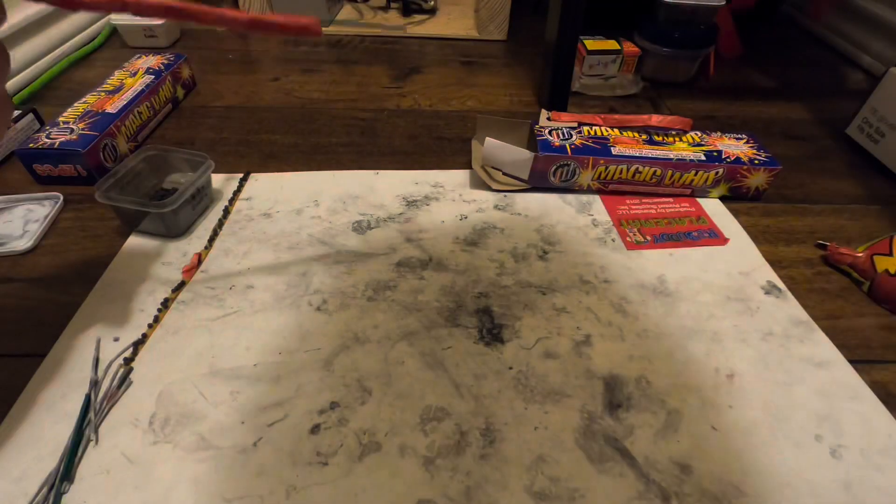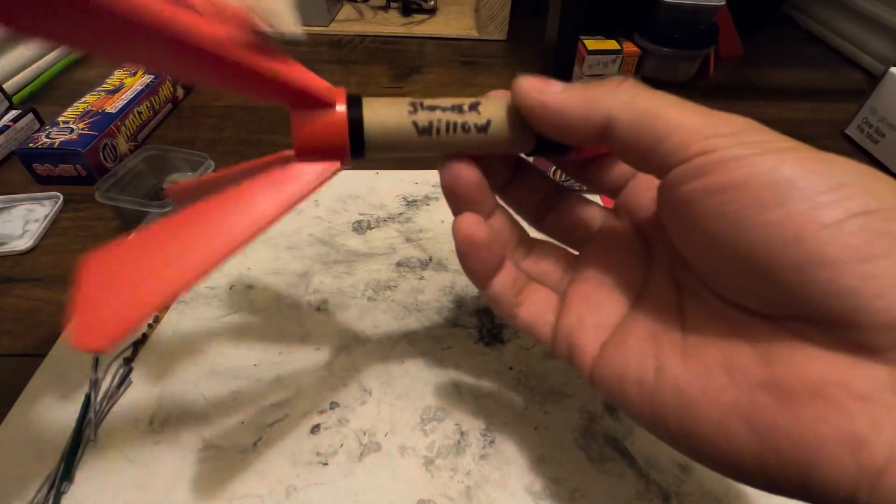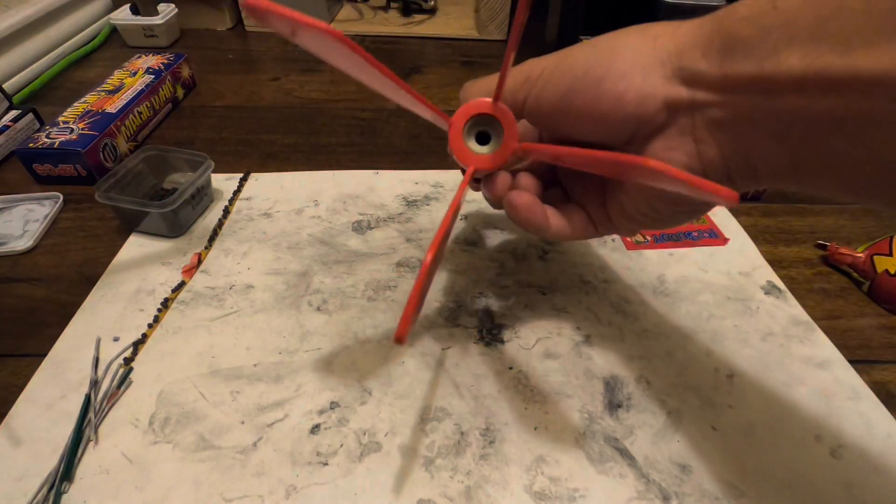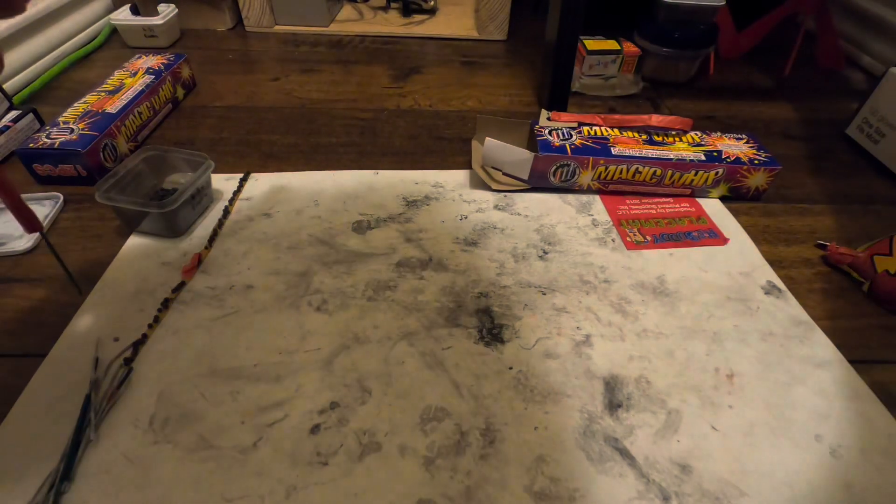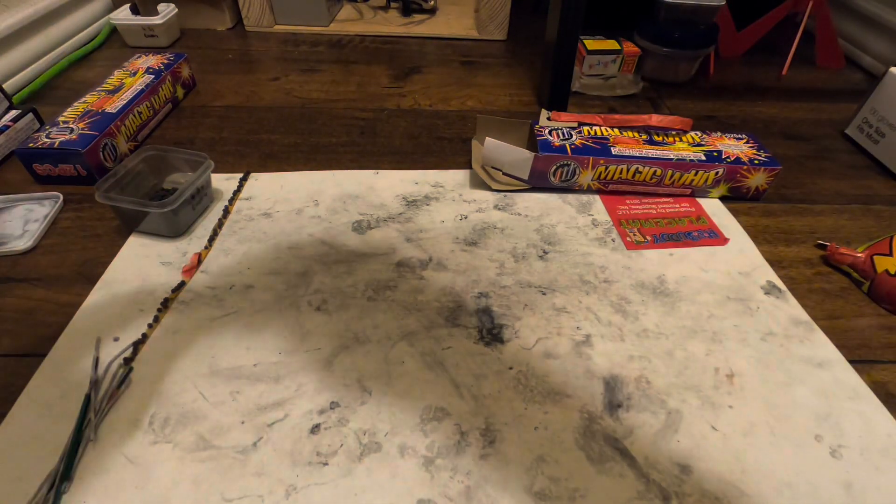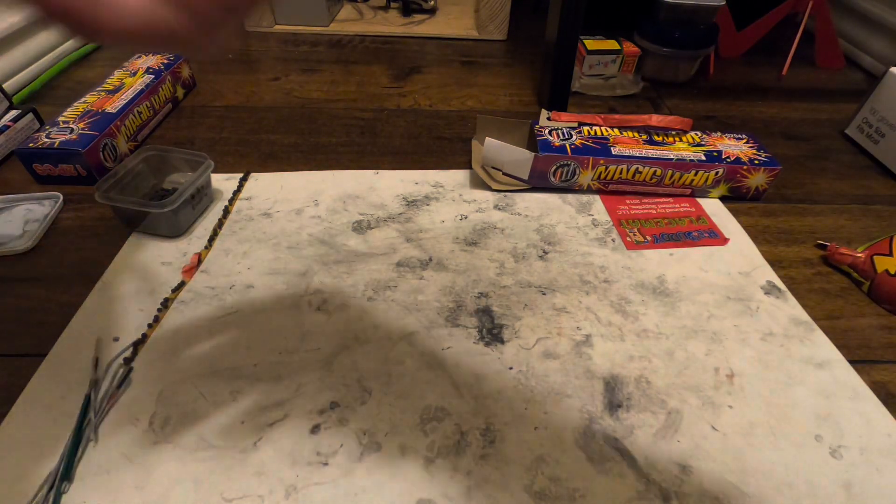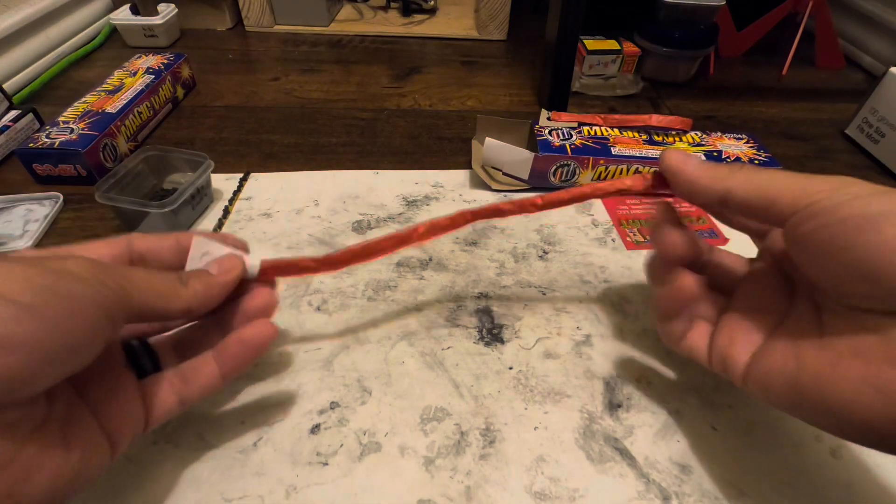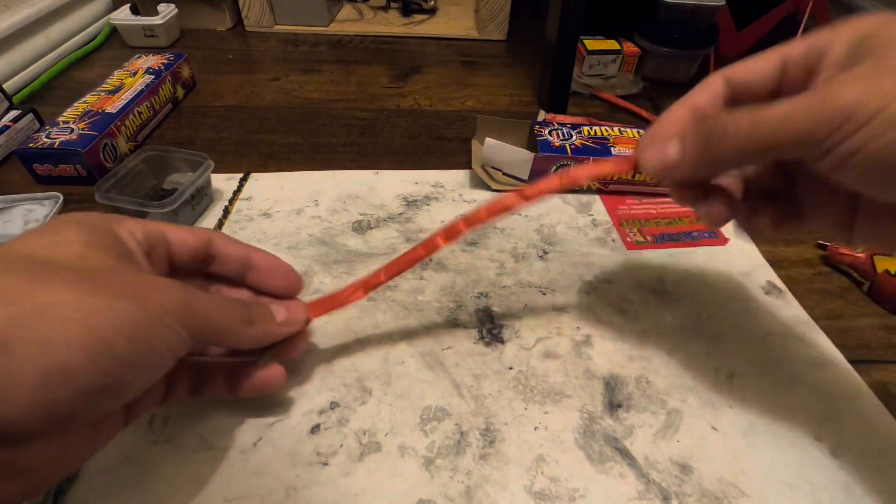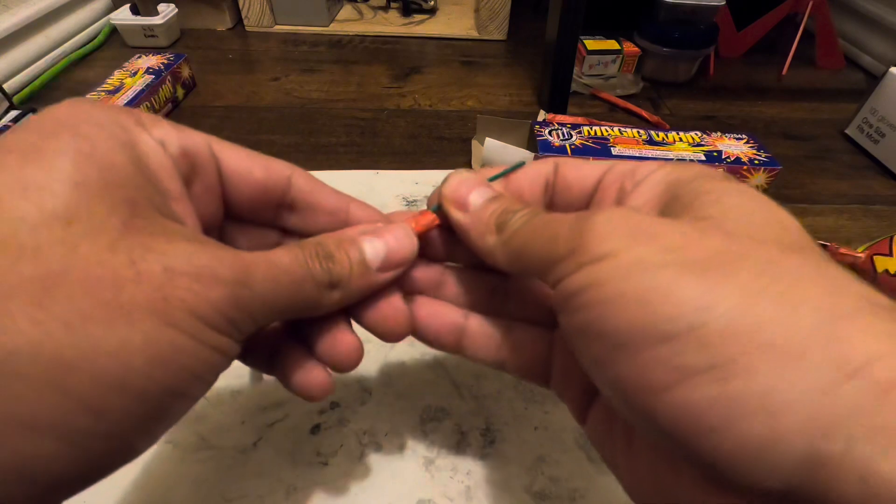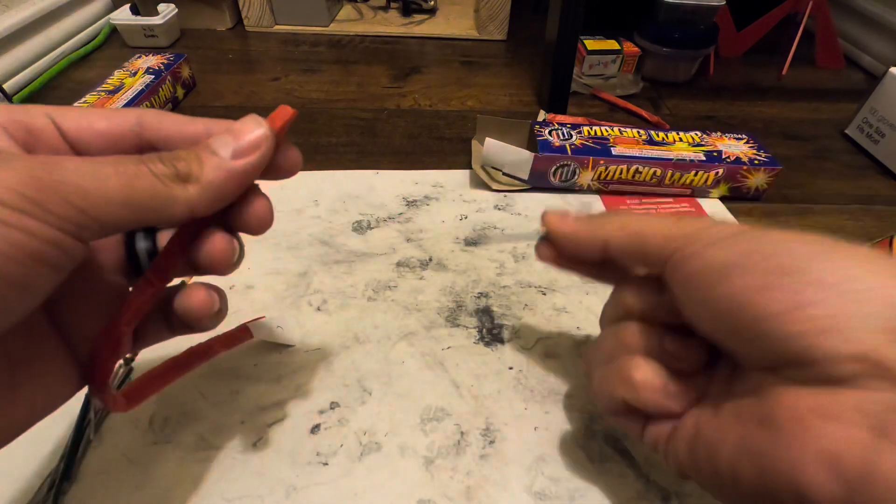Such as my rockets. I pretty much just go ahead and make rockets here and put the heading on there and put some stars in there or something like that just to get an effect. But anyways, this here is the magic whip. It's just the fuse.